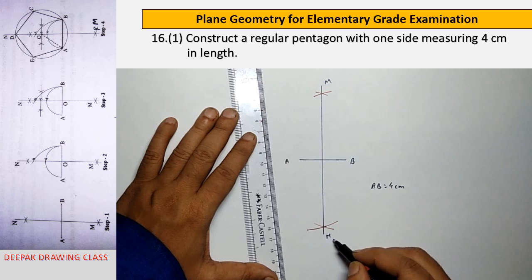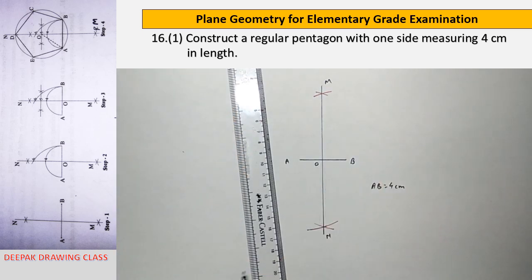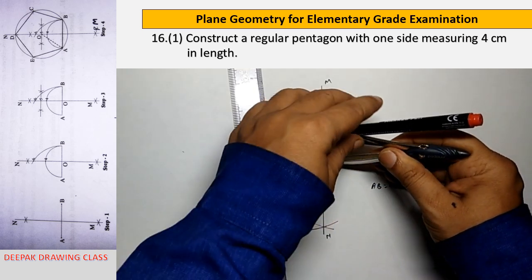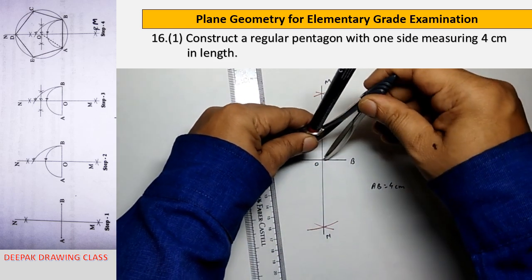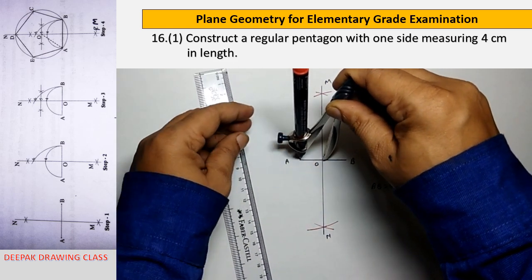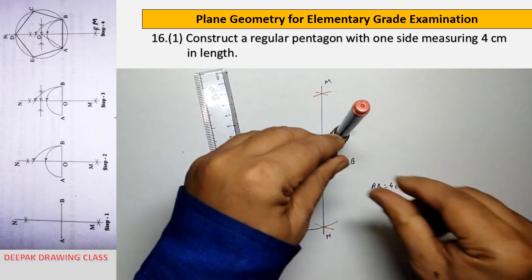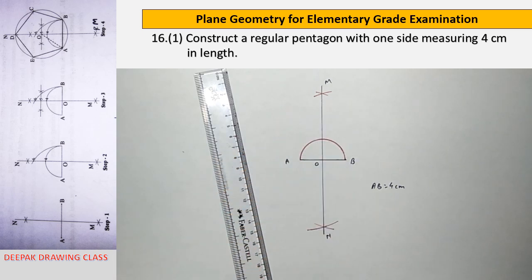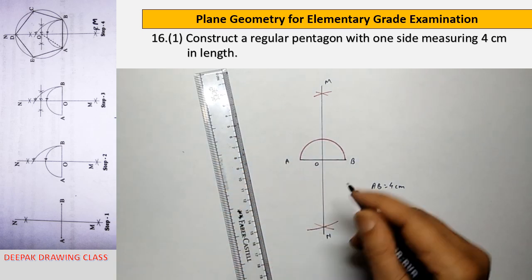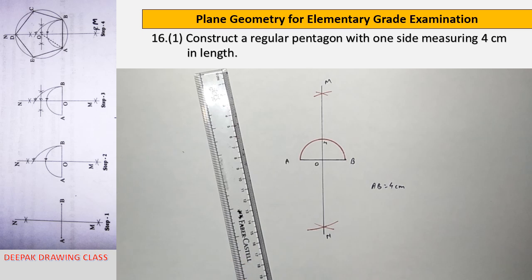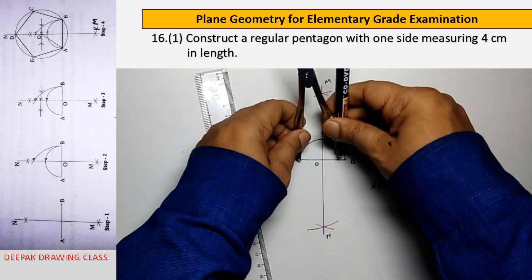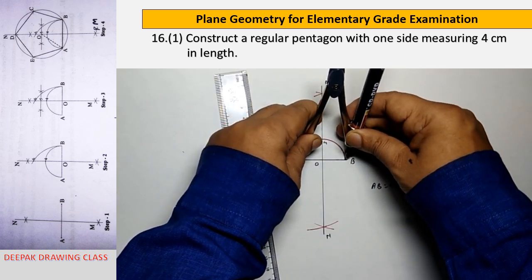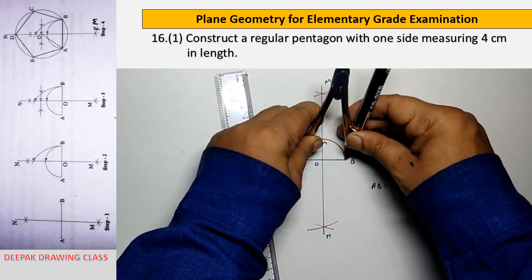Name the intersecting point as O. Now with the help of a compass and with center O, draw a semicircle on line AB. Name the intersecting point of the perpendicular bisector and the semicircle as point 4.